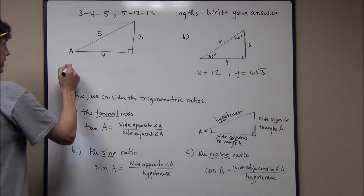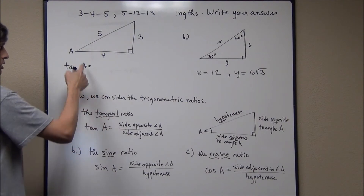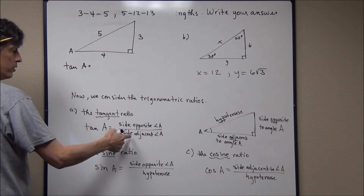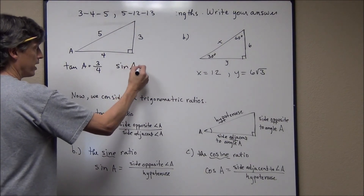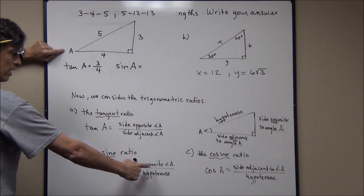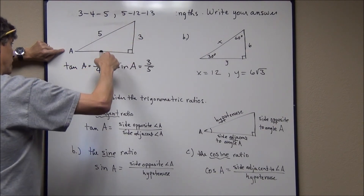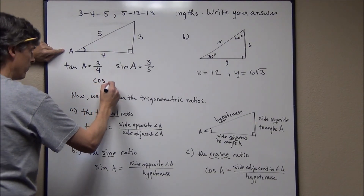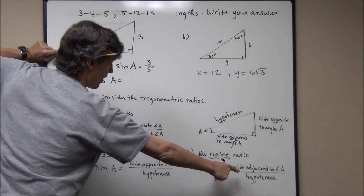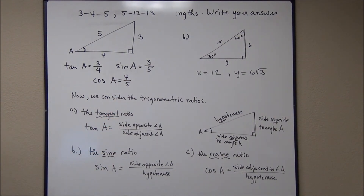The tangent of angle A equals the opposite side over the adjacent side, which is 3/4. The sine of angle A equals the opposite over the hypotenuse, which is 3/5. The cosine of angle A equals the adjacent over the hypotenuse, which is 4/5. From these ratios you can do all sorts of things, like finding measurements of angles using trigonometry.